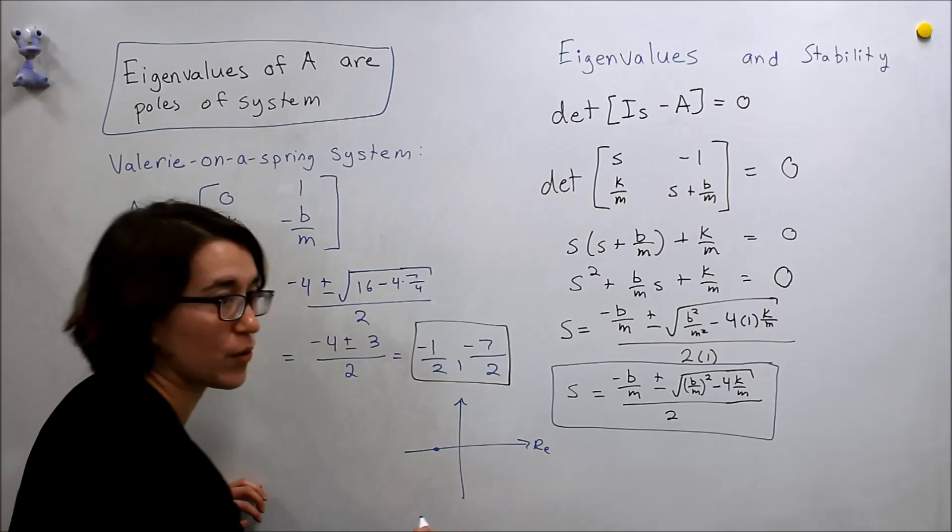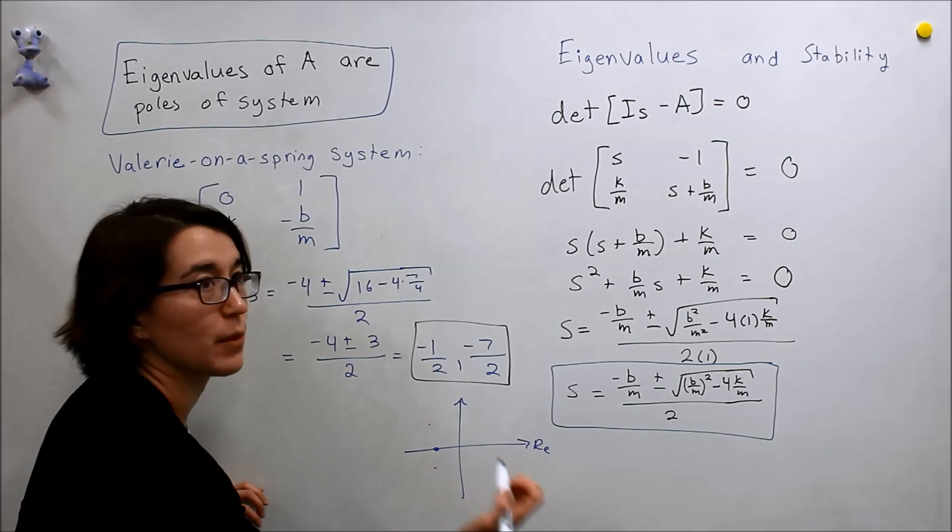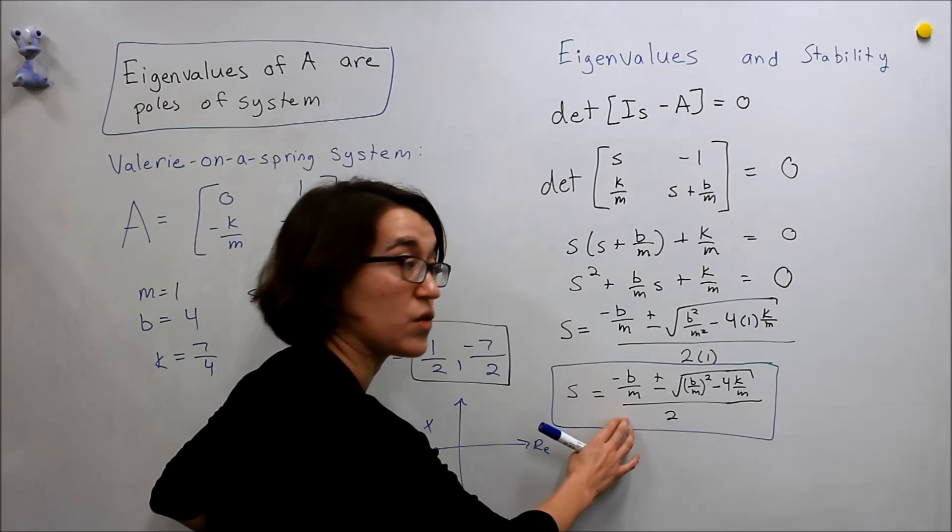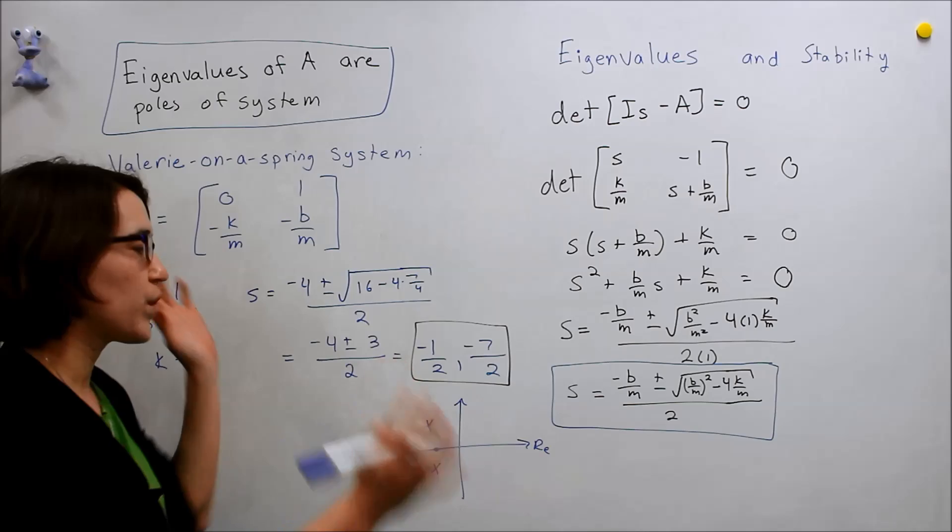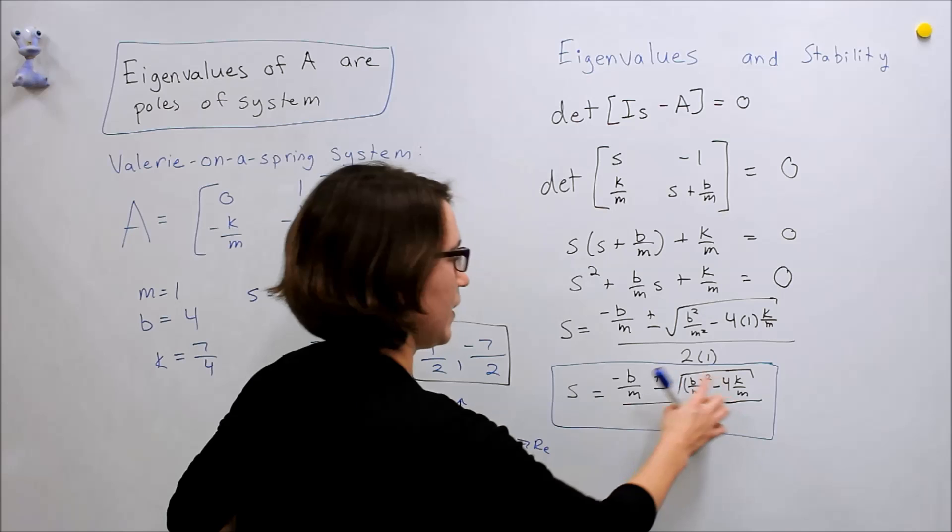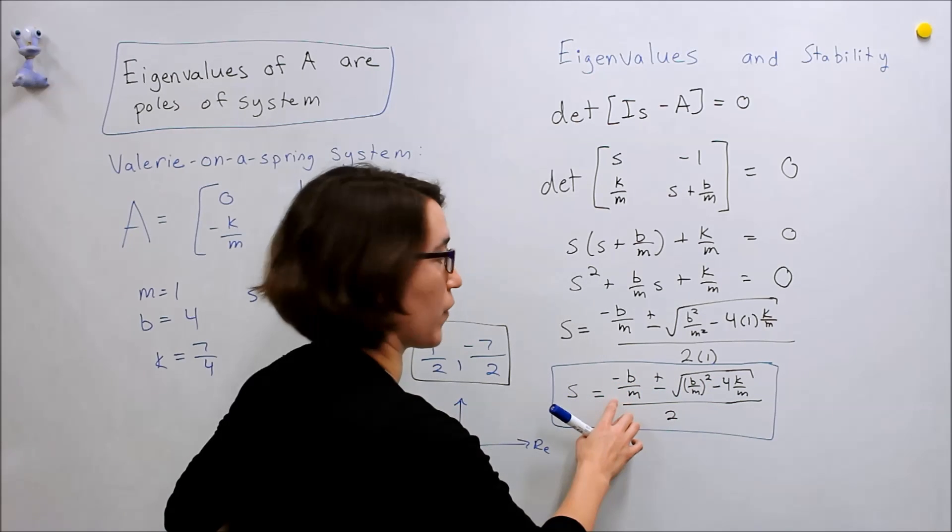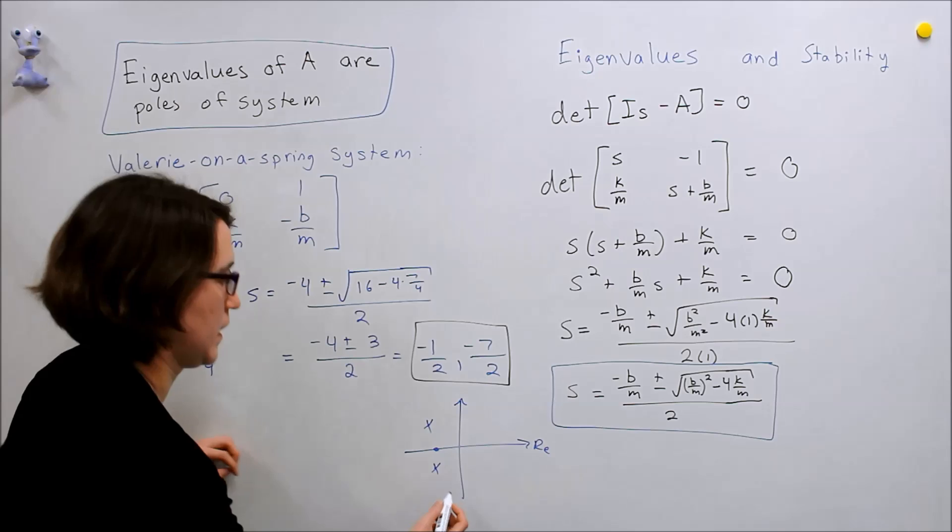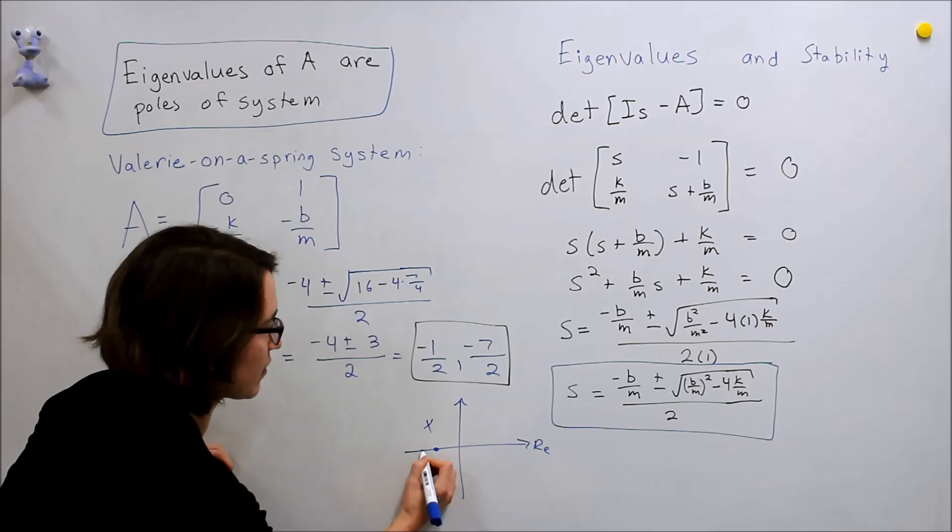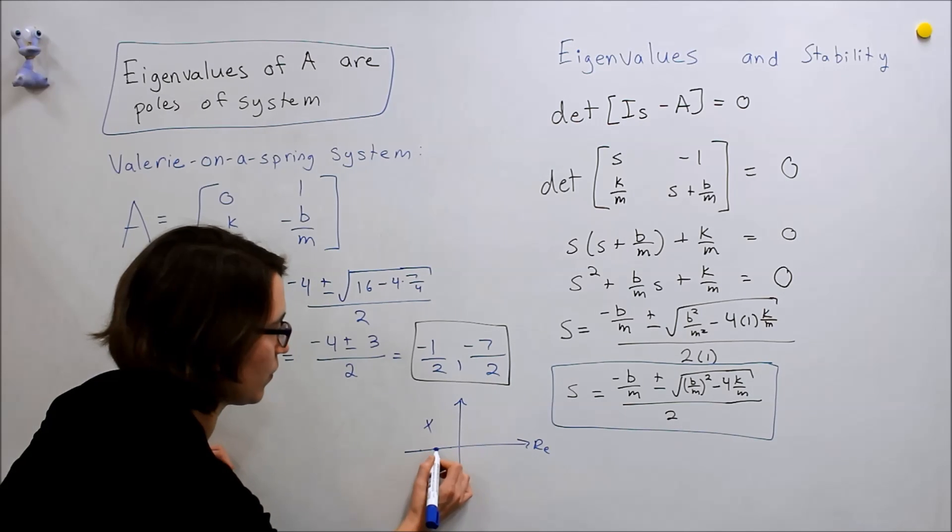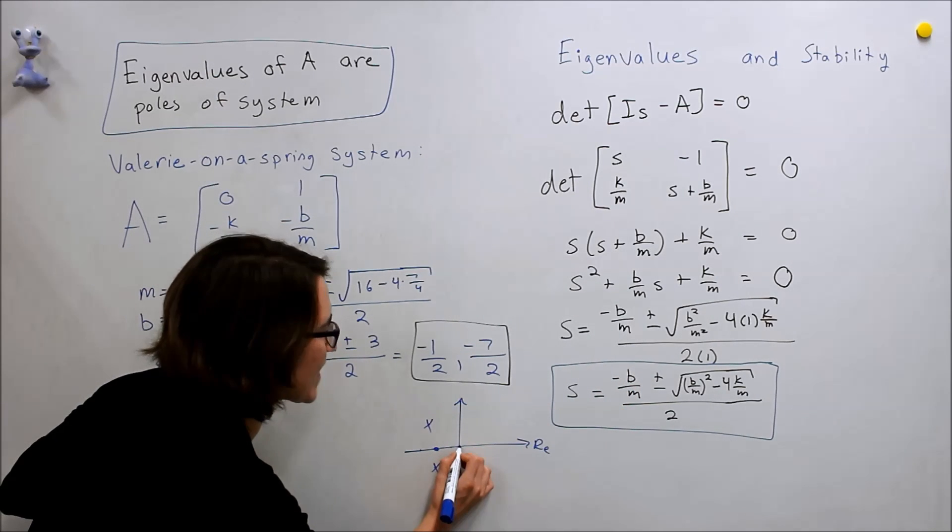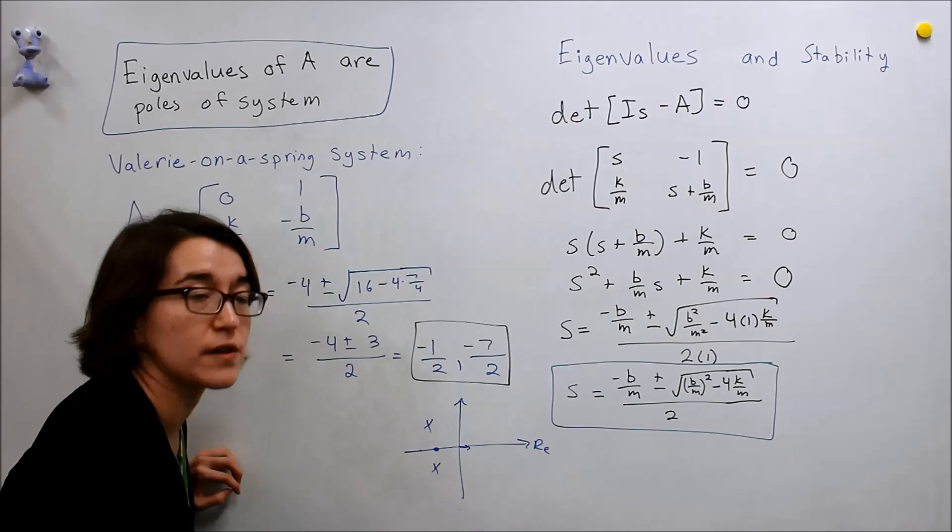And so you would have in our plane, you would have some negative value, plus or minus some imaginary component. But you would be in the left half plane, so you would be stable. The only way that it would be not stable is if this value ends up being greater than B over M. So you could have, if these are real values, you'd get this negative value plus or minus some value. And if that value ends up being larger than B over M, then you could, that's the only time when you would go into the positive region and become unstable.